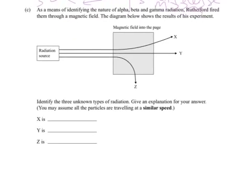As a means of identifying the nature of alpha, beta and gamma radiation, Rutherford fired them through a magnetic field. The diagram below shows the results of this experiment. This is a magnetic field into the page. Let's just put a couple of X's, because otherwise I forget. There we go, that should be enough.